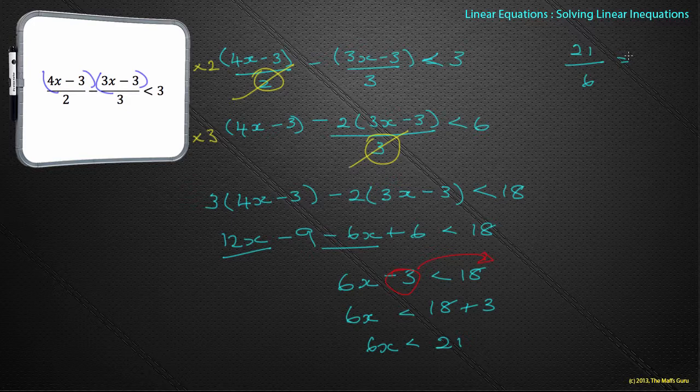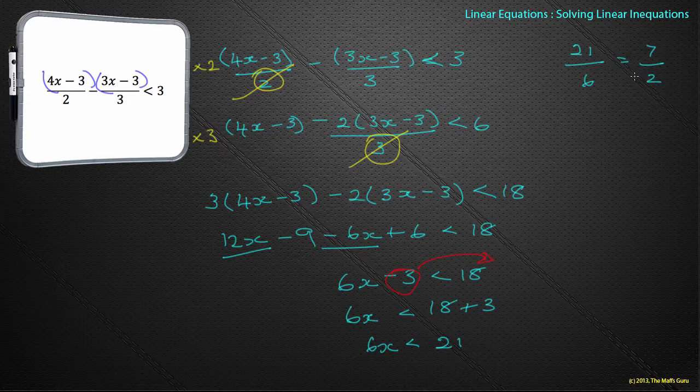21 divided by 6 is equal to - what goes into both of those? 3. 3 goes into 21 seven times, and 3 goes into 6 twice. Can we make that any lower? Nope. So there we go. I can now say that x is less than 7 over 2, or if we wanted to, 3.5.